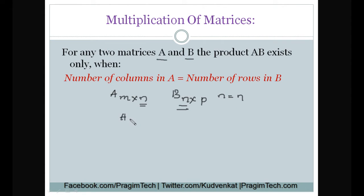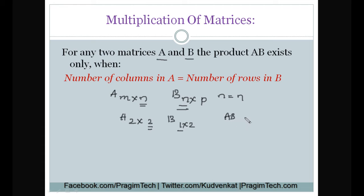For example, if A is a 2 by 2 matrix and B is a matrix of 1 by 2, then is it possible to have multiplication between these two matrices? No. The number of columns in A is 2 and the number of rows in B is 1, so we can say that AB does not exist.